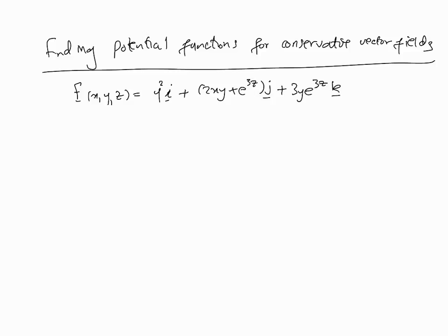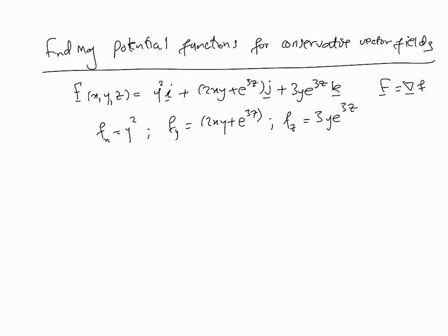Given a conservative vector field F, this means F equals grad f. So fx must equal y squared, fy must equal 2xy plus e to the 3z, and fz must equal 3y·e to the 3z. We need to find the function f satisfying all three conditions. Starting with the first condition, f(x, y, z) is the integral of y squared with respect to x, which gives y squared·x plus some function g of y and z.